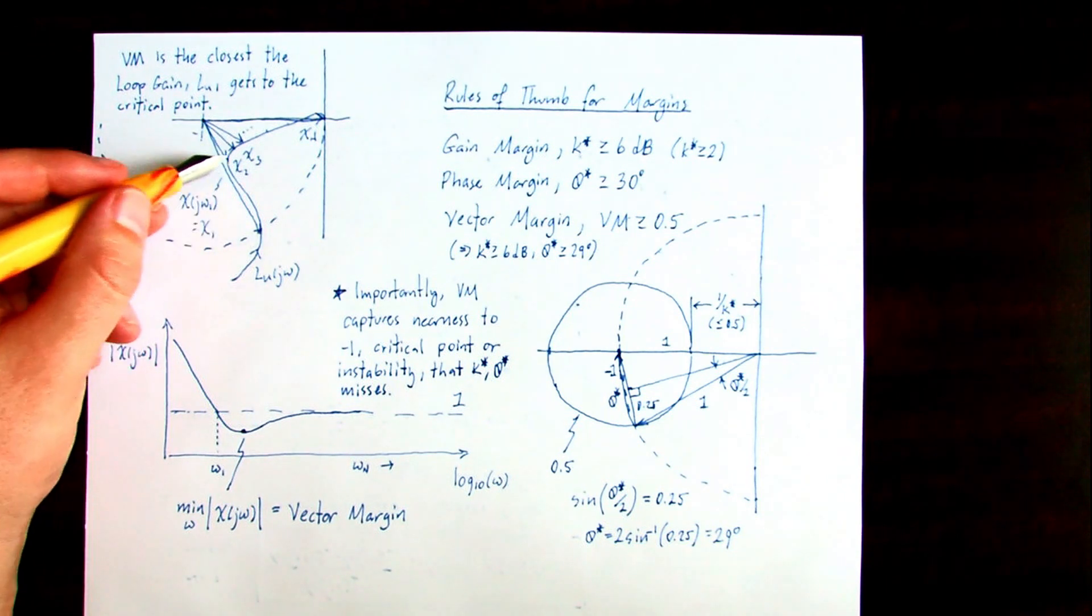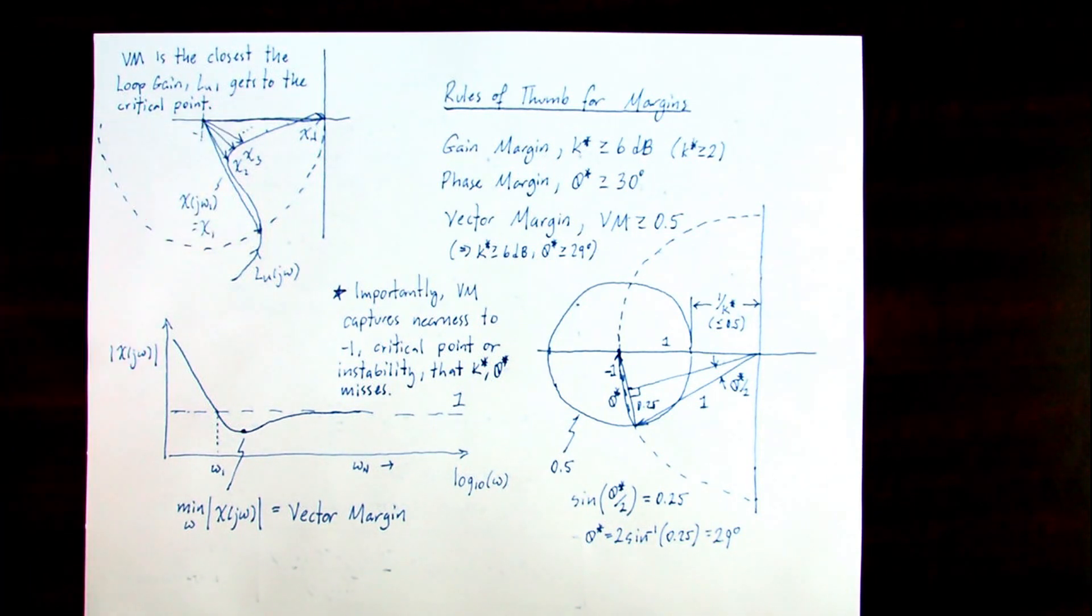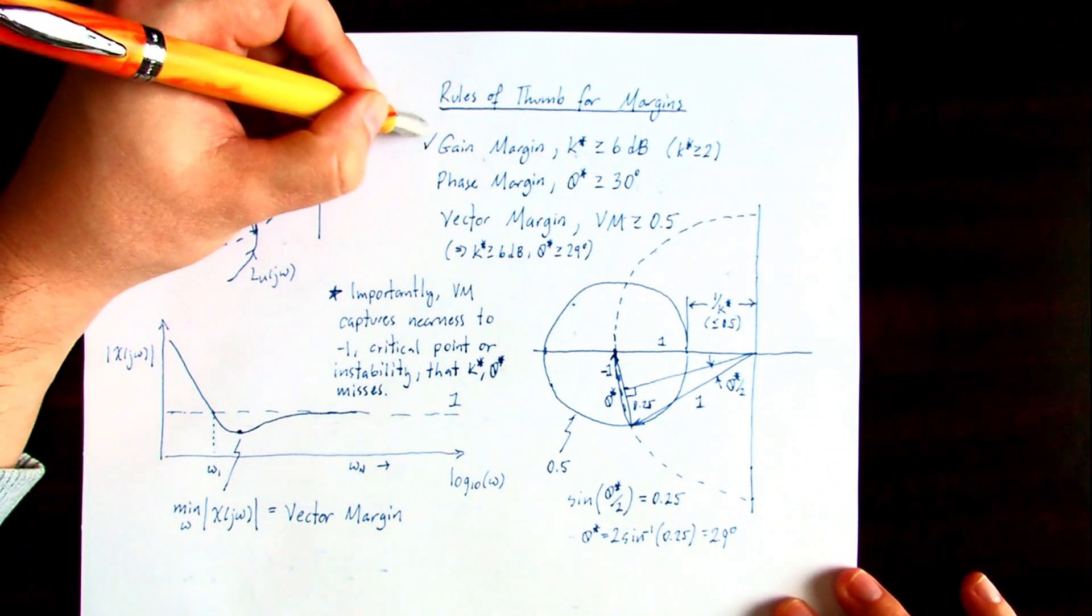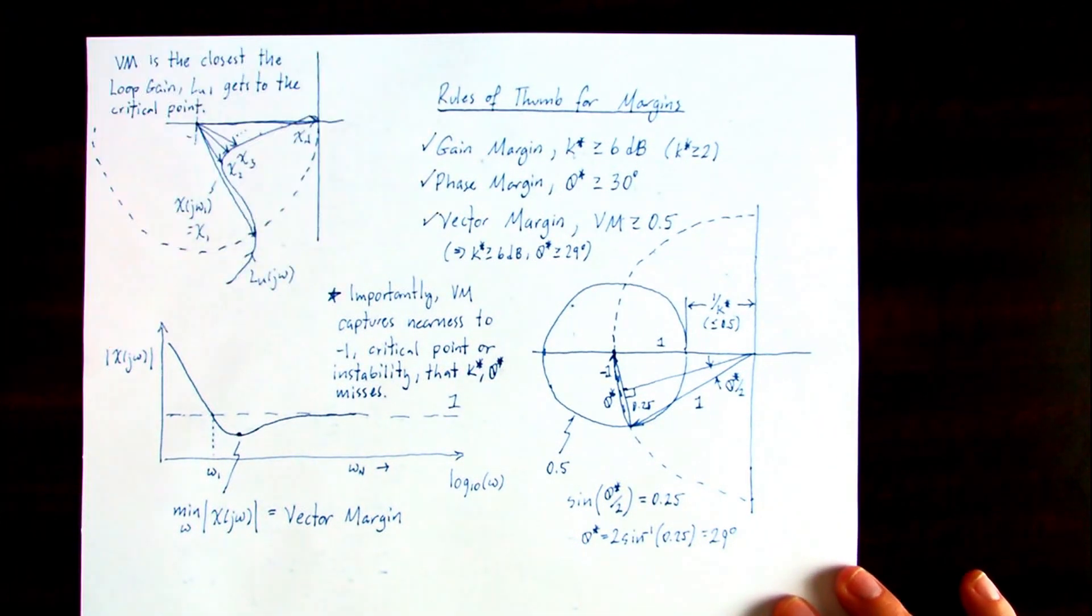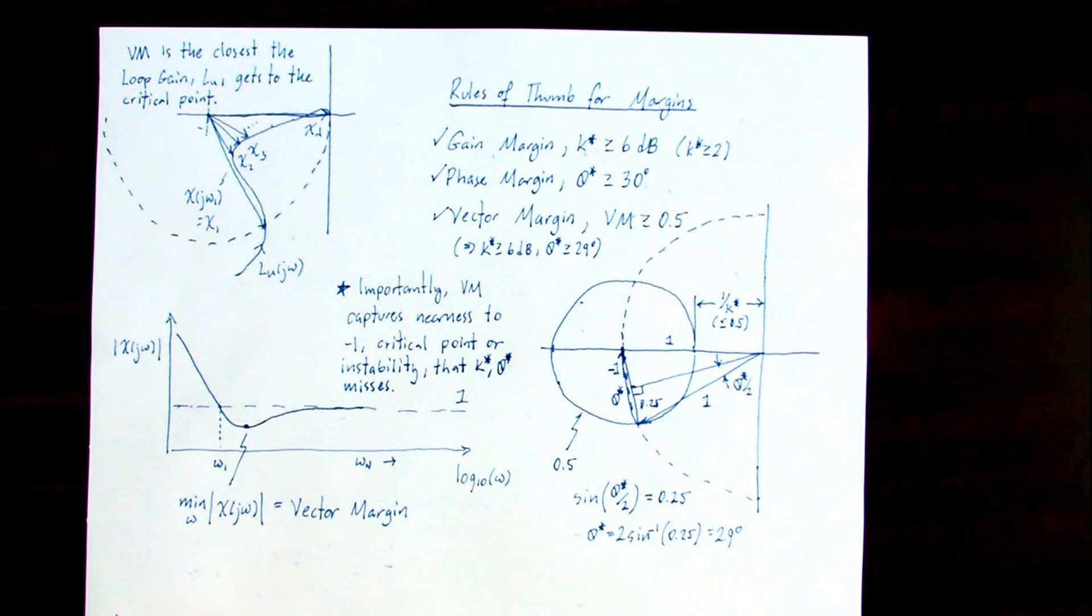We should not throw away gain and phase margin just because vector margin as a single quantity implies that roughly gain and phase margins are met. The reason is that when we have multiple margins, vector margin may only pick out one of them. So having gain margin and phase margin evaluated gives us a more complete picture of the robustness of our system and situations where we could go unstable. We'll discuss these multiple margins in the next video.